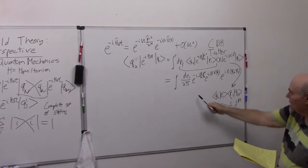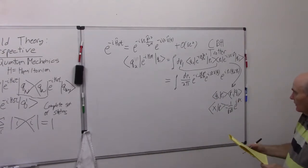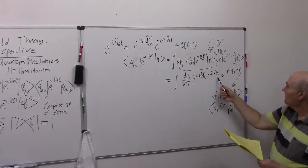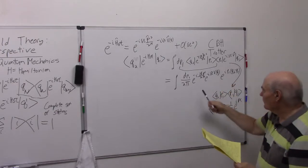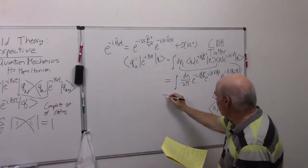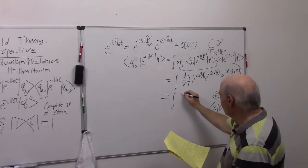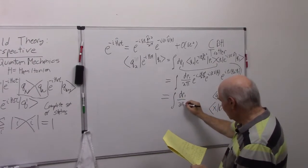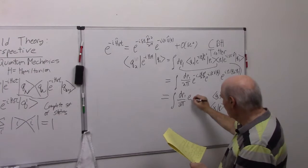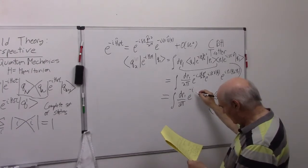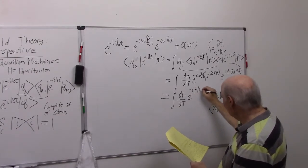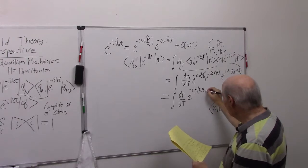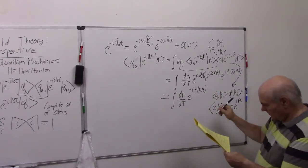So this is a much easier formula to work with. And just we'll write it in a way that's suggestive: dp1 over 2 pi, e to the minus i h of p1 comma q1 delta t.